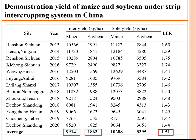We conducted demonstration trials across multiple provinces in China including Sichuan, Ningxia, Gansu, Anhui, Shaanxi, Henan, Shandong, and Hebei. The average maize yield in intercropping was 9.9 tons per hectare and average soybean yield was 1.8 tons per hectare. Compared to sole cropping — maize at 10.2 tons and soybean at 3.4 tons — the average Land Equivalent Ratio (LER) in maize-soybean strip intercropping across China is 1.5, which is very high compared to other intercropping systems worldwide.